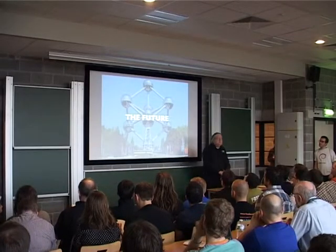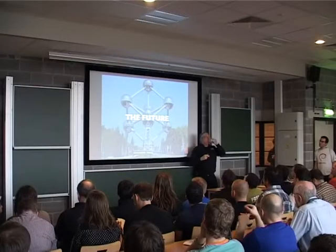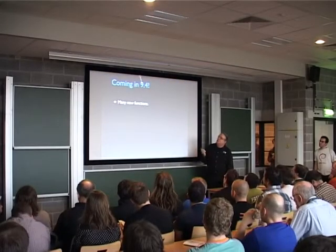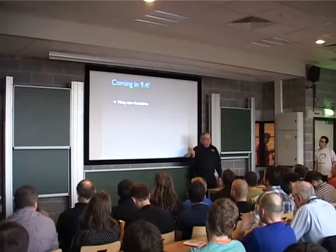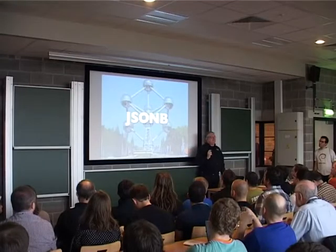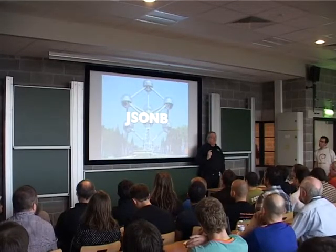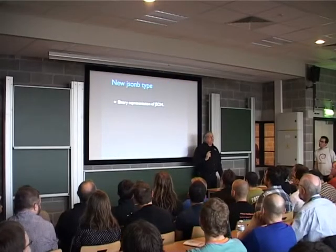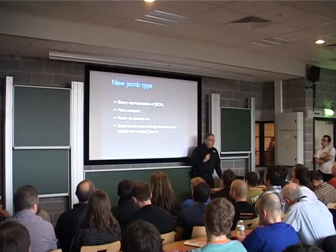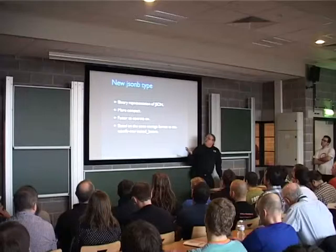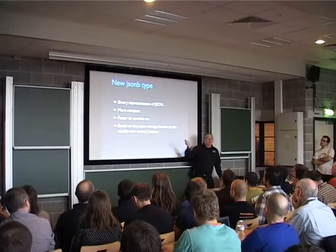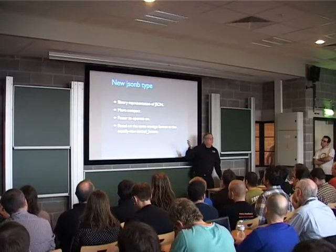That's what we have right now. But now we have the future. Coming in 9.4: all sorts of new functions for Postgres and for Postgres JSON. There are some performance enhancements and the JSONB type. It's a binary representation of JSON. It's more compact, it's faster to operate on, and it's based on the same storage format as the equally new nested HStore type. But JSONB is a core type — it's not an extension or a contrib module. You get it when Postgres starts up.